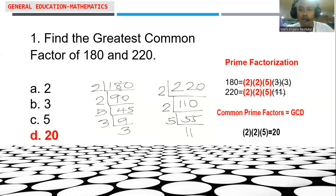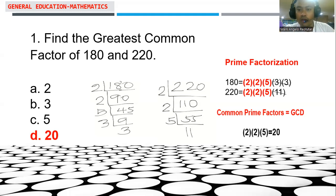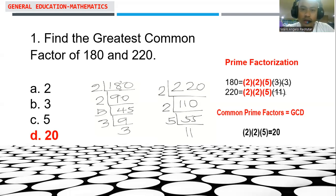The prime factors of 220 are 2, 2, 5, and 11. Now we look for the common prime factors between 180 and 220. There are three prime factors in common to both 180 and 220. We multiply the common three prime factors, and that gives us a value of 20.